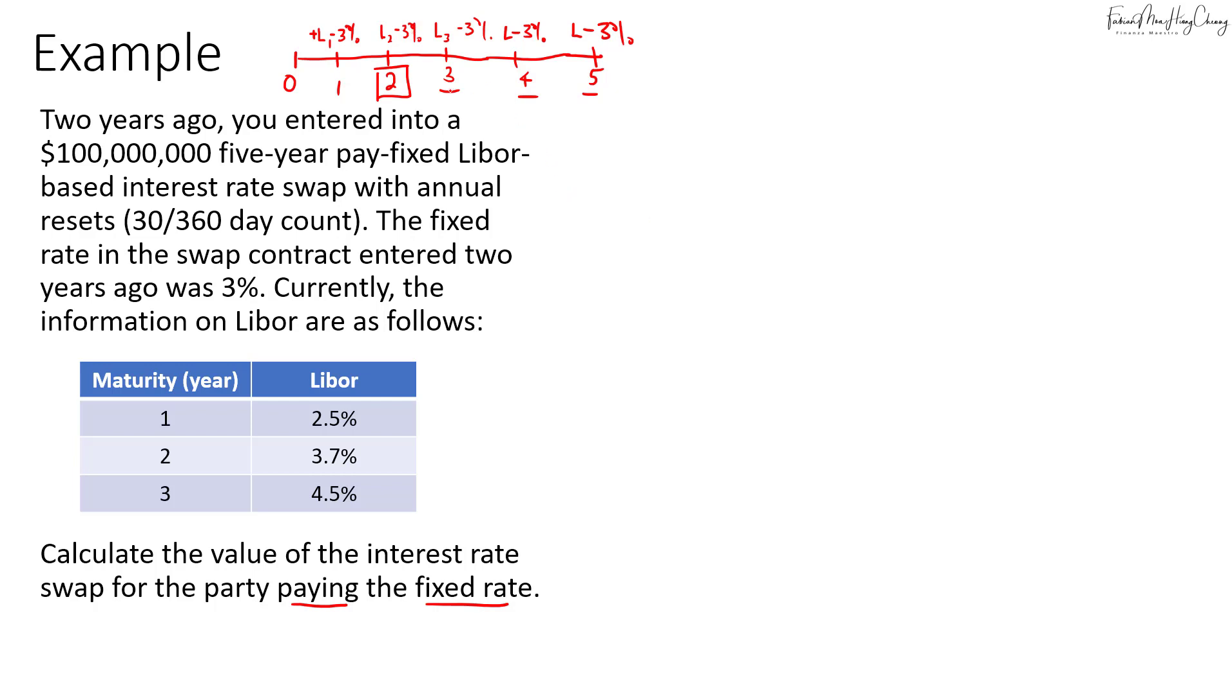So originally we did a pay 3%, so now we have to receive fixed. So how are we gonna get the fixed rate as of year two? So what we need to do is based on the current rate at year two we will calculate the fixed swap rate as of today based on these LIBOR rates.